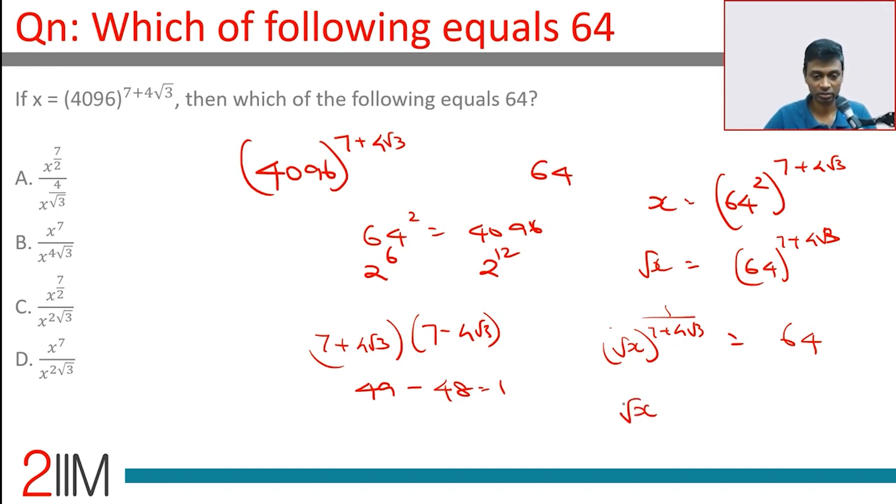Or square root of x to the power 7 minus 4 root 3 is 64. How do we get there? Okay, this is x power 7 by 2 divided by x power 4 by root 3. This is x power 7 by 2 minus 4 by root 3.